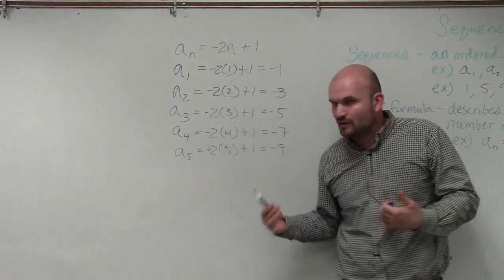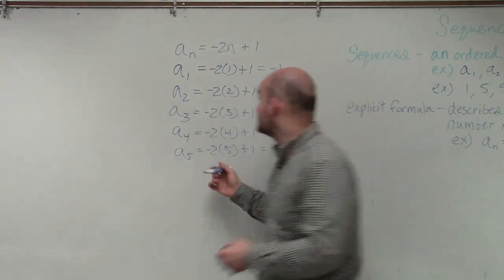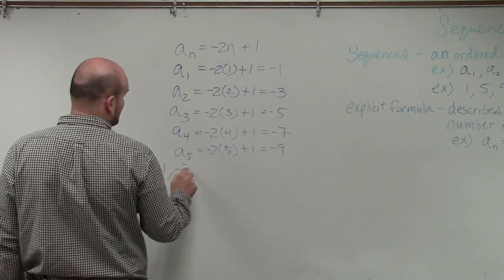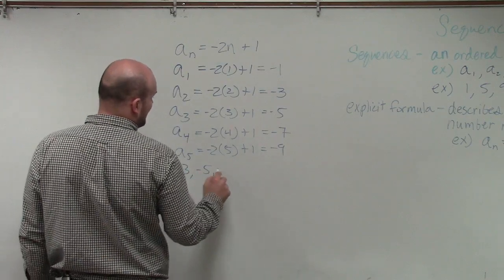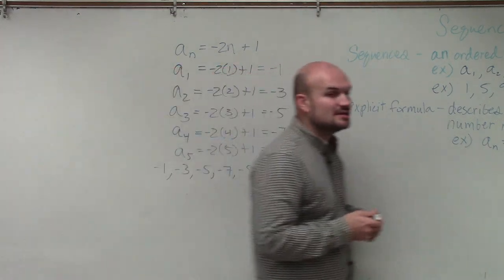So this isn't part of the question, but we know terms 1 through 5, right? If we were going to list them as a sequence, we'd write negative 1, negative 3, negative 5, negative 7, and negative 9. That would be our sequence.